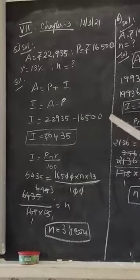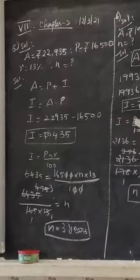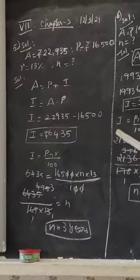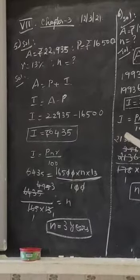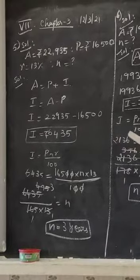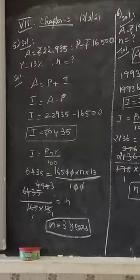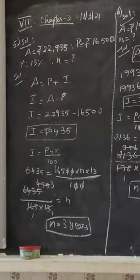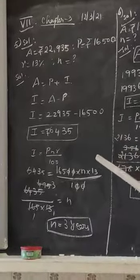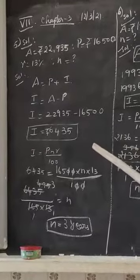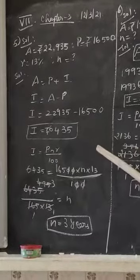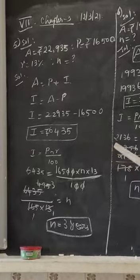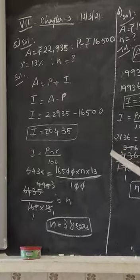So I = A minus P. Substituting: I = 22935 minus 16500. Therefore I equals rupees 6435.